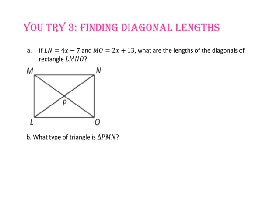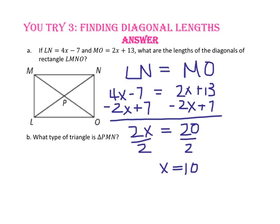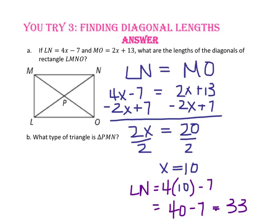Pause the video and do you-try number 3, part A. If the length of segment LN is 4X minus 7 and segment MO is 2X plus 13, what are the lengths of the diagonals of rectangle LMNO? Since the diagonals are equal, set 4X minus 7 equal to 2X plus 13. Subtracting 2X and adding 7 to both sides gives 2X equals 20, so X equals 10. Substituting 10 into 4X minus 7 gives 40 minus 7, or 33. Don't forget to check by substituting into 2X plus 13 as well.